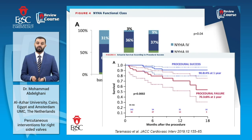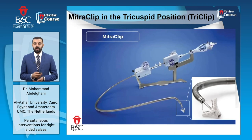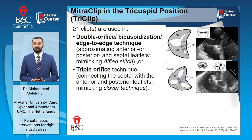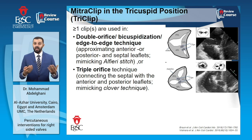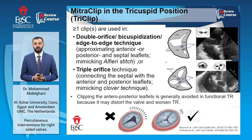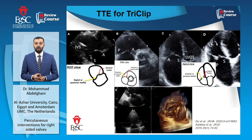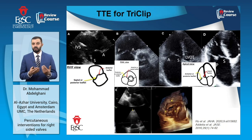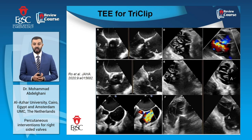The MitraClip in the tricuspid position — the so-called TriClip — is the most commonly used technique nowadays. Owing to the extensive coaptation area, more than one clip is usually required. There are mainly two techniques: either approximating the septal leaflet to the anterior or posterior leaflet creating a double orifice, or approximating both the anterior and posterior leaflets to the septal leaflet creating a triple orifice. Clipping of the anterior to the posterior leaflet is generally avoided as it may deteriorate functional TR. Identification of individual tricuspid valve leaflets is of extreme importance during TriClip procedures, and although 2D transthoracic echo can be used, transesophageal echo is far superior, especially using transgastric views, with 3D TEE being even further superior.